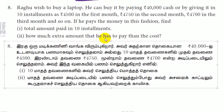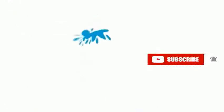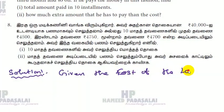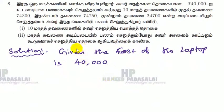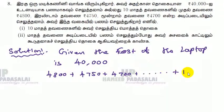Now we are going to write the solution. Given: the cost of the laptop is 40,000. Rahu pays by cash 40,000, or in 10 installments: 1st installment 4,800, 2nd installment 4,750, 3rd installment 4,700, and the 10th installment follows the same pattern.